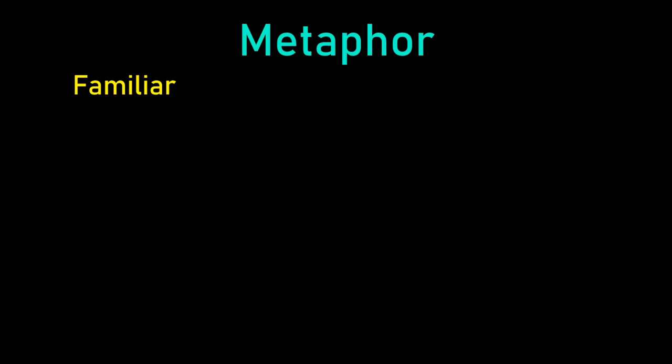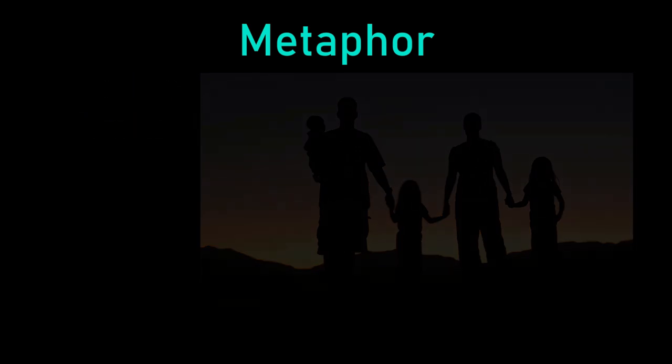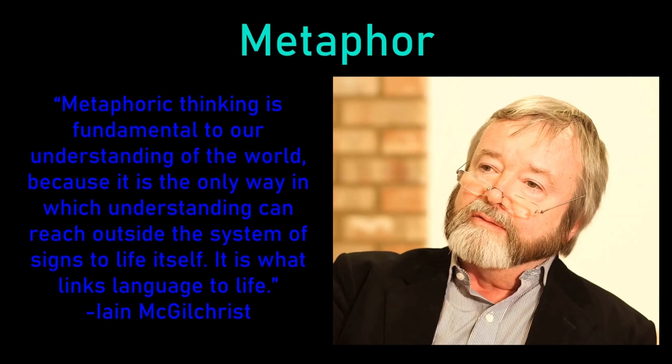Take the word familiar for example. What does it mean to become familiar with something? It means to familiarize ourselves with it. But the roots of the word familiar are related to the Latin word familia, which means our household. The idea of your family is being used as a metaphor to mean something to which we have grown accustomed to, that we know intimately — like those with whom we are familiar. Essentially, a metaphor takes a concept which we already know and uses it to illuminate something which we are trying to know, because of a similarity between them. This is how words are linked to meanings. As Ian McGilchrist writes, metaphoric thinking is fundamental to understanding the world, because it is the only way in which understanding can reach outside the system of signs to life itself — it is what links language to life.